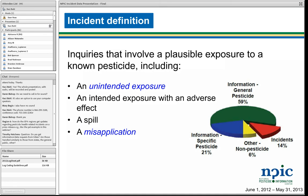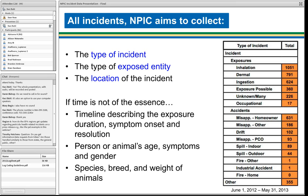The type of incident is recorded. If there is an exposure, we try to categorize the route of exposure: inhalation, dermal, ingestion, occupational, or exposure possible, unknown, or maybe many routes of exposure. We also try to capture the timeline describing the exposure duration, symptom onset, and resolution. Of course, if someone needs to talk to poison control right away, we make that referral. But if there is time, we try to collect detailed information to help us use the data in positive ways. We collect age, symptoms, gender, and for animals, species, breed, and weight.